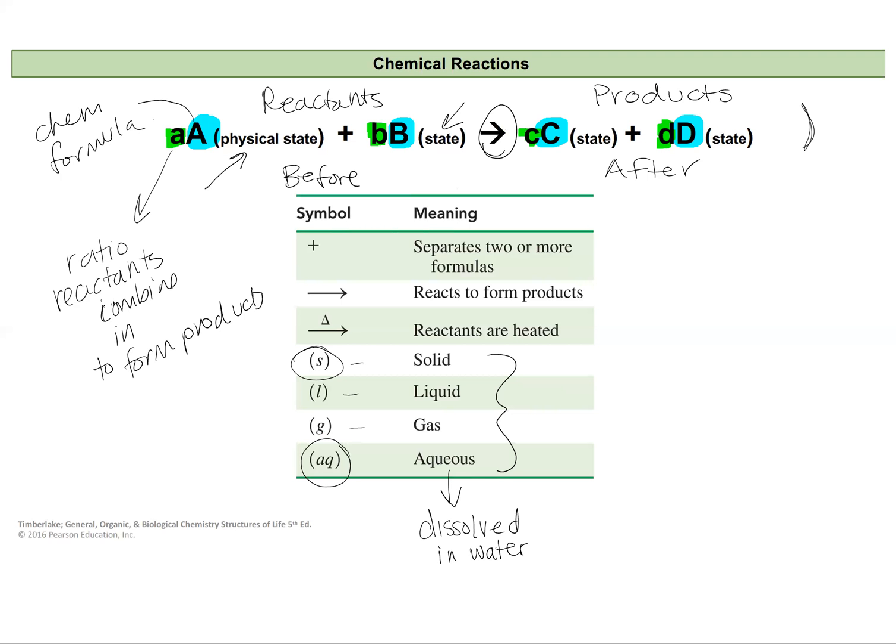A few other things you'll see is the plus symbols here. These separate our different chemicals that are reacting or forming. And it's kind of like saying A adds to B, and that add is the plus symbol, rather than a comma or an and or anything like that. And so we'll separate our different chemicals that are combining with a plus symbol.